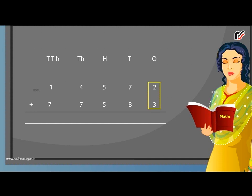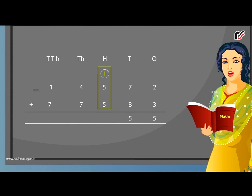First, add the ones: 2 plus 3 is equal to 5 ones. Write 5 under the ones column. Next, add the tens: 7 plus 8 is equal to 15 tens. Write 5 under the tens column and carry 1 to the hundreds column. Next, add the hundreds: 1 carried over plus 5 plus 5 is equal to 11 hundreds.